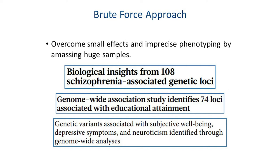This kind of collaborative science has led to significant progress in identifying novel genes related to psychological traits. One of the biggest success stories is with schizophrenia, led by the Psychiatric Genomics Consortium, where more recently around 160 different genetic loci related to schizophrenia have been identified. Similar work has been done on educational attainment, depression, and neuroticism.